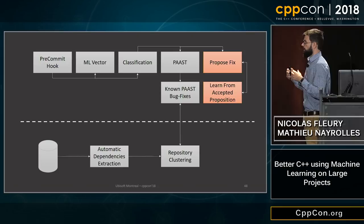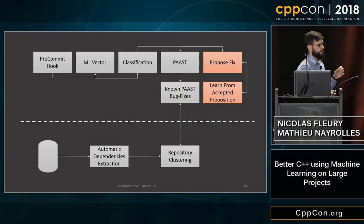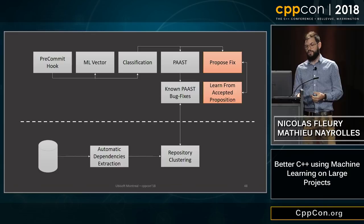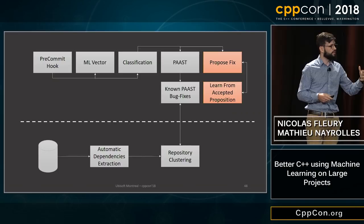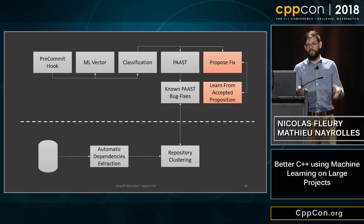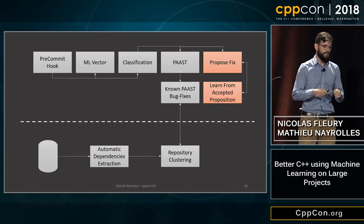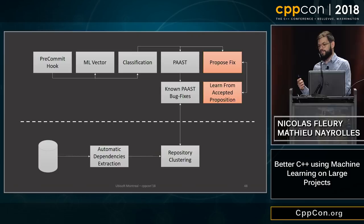To summarize the pipeline: first you make a commit, which is fetched by a pre-commit hook. We compute our machine learning vector composed of our different features, then do the classification. If the classification returns greater than 50% risk, we compute the partial abstracted abstract syntax tree of your diff and try to match it with known bug fixes. If we find a fix, we propose it to you, and we learn from accepted propositions.